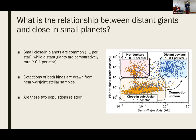More specifically, we're asking what is the relationship between distant giants and close-in small planets. We know from transit surveys like Kepler and K2 that small close-in planets are essentially ubiquitous — you find them at a rate of about one per star. By contrast, distant giants are comparatively rare, occurring around only about 10% of stars. What complicates this picture is that the stellar samples from which detections of these two planet classes are drawn are essentially disjoint, meaning very few stars have been probed for both a close-in sub-Jovian and a distant giant. So the question still remains: are these two populations of planets fundamentally related to each other?